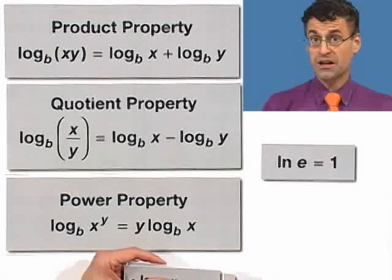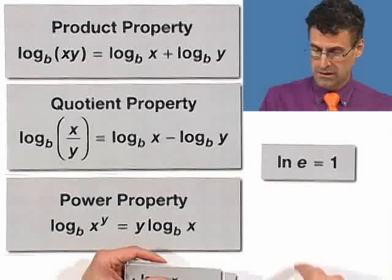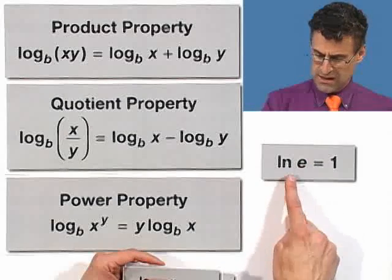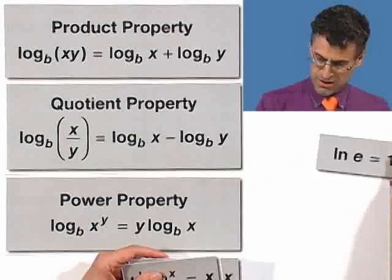Natural log, remember, natural log is just log base e. So this is log base e of e. Well, e to the what power gives me e? E to the first power. So that equals 1.